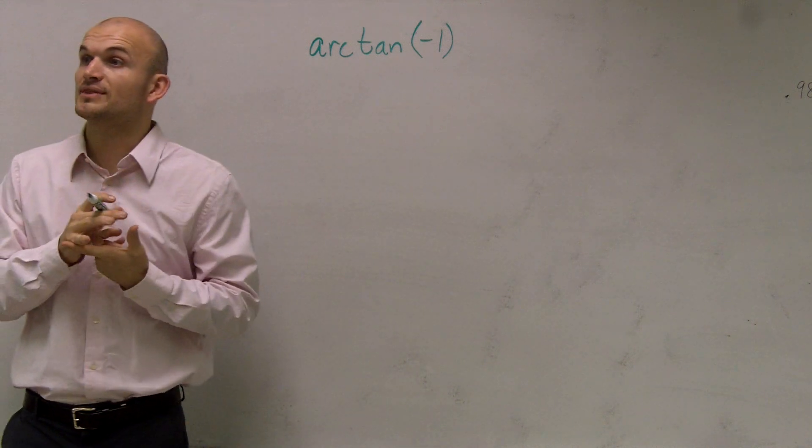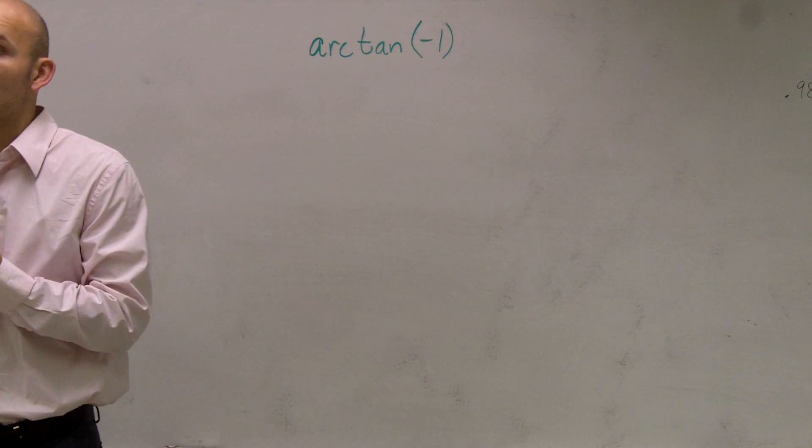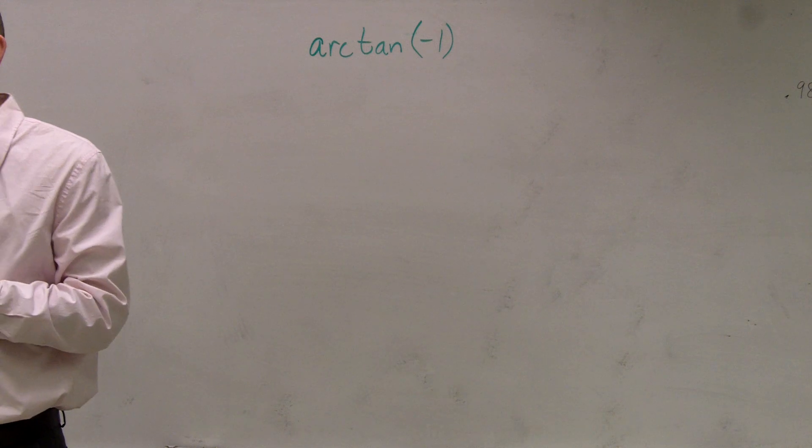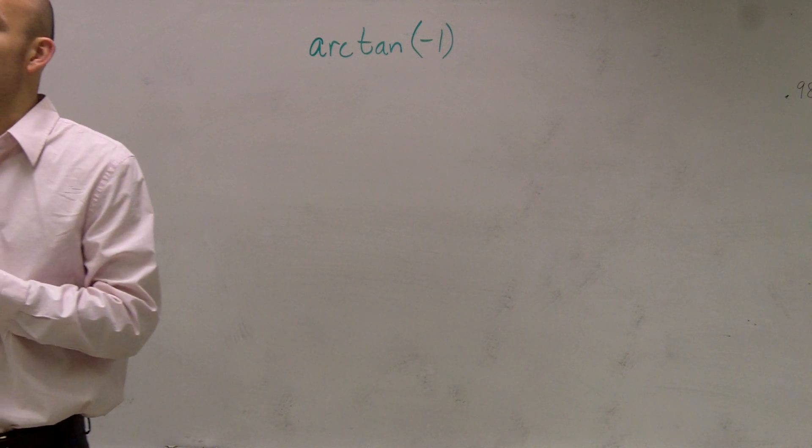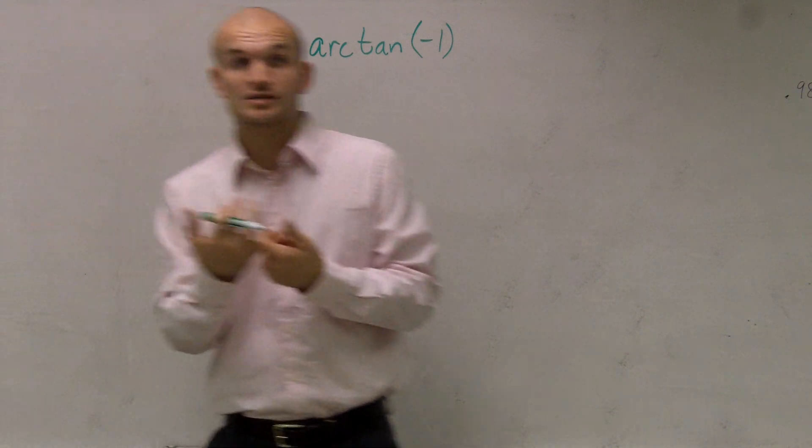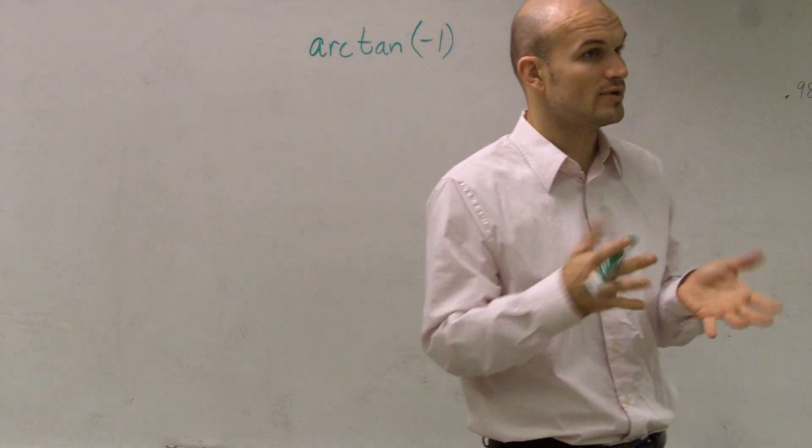So to find the inverse tan of negative 1, there's a couple things that we need to remember. First of all, we need to understand how do we get negative 1 for our tangent, right? Is that actually going to be a part of our unit circle? Because if it's a part of our unit circle, that's going to help us out.